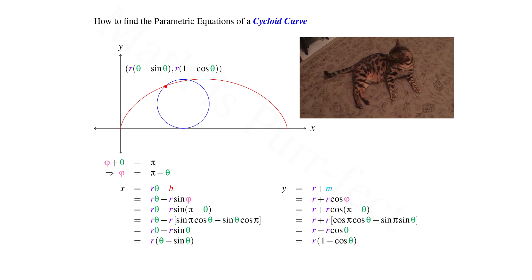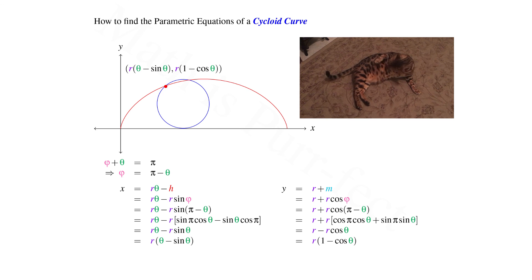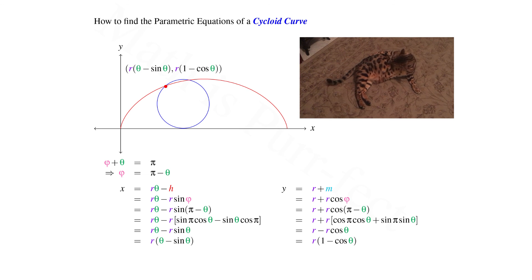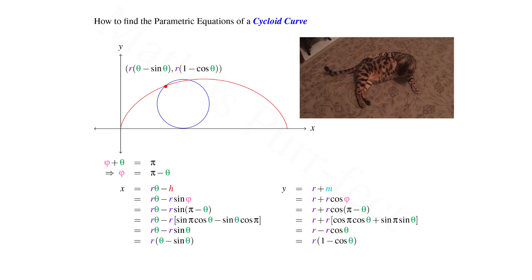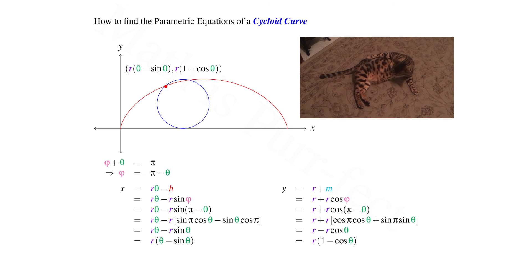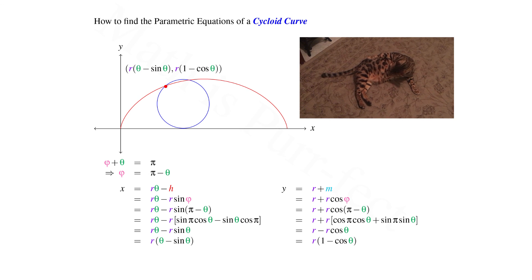Hence, the parametric equations for a cycloid curve with respect to radius r and angle theta are given as r times the quantity, theta minus sine of theta, comma, r times the quantity, 1 minus cosine of theta.